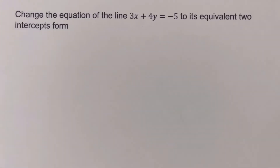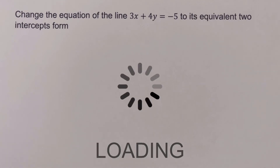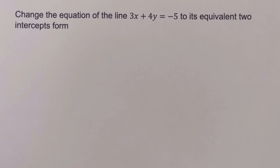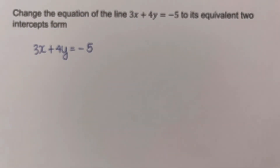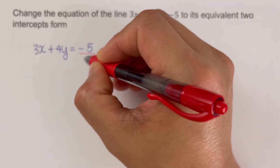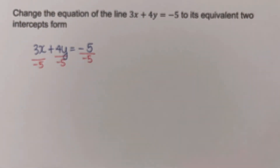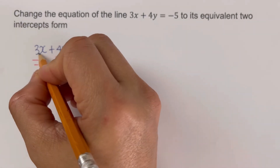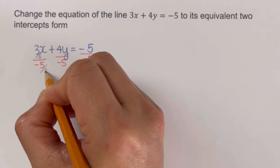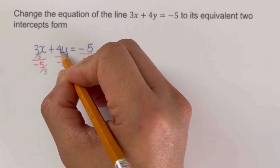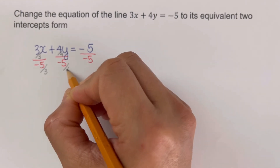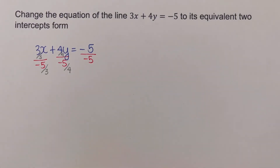Let's move on to the next example. Again, I encourage you to pause the video and try this on your own. We are given another standard form and we rewrite the equation. We want the right side equal to positive one, so we divide both sides by negative five. The coefficient of x should be one, so we divide by 3; the y coefficient should also be one, so we divide by 4.